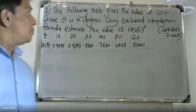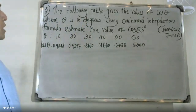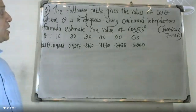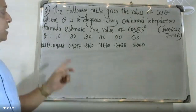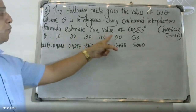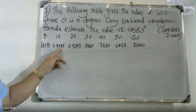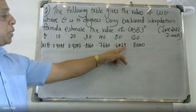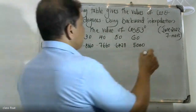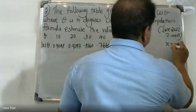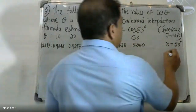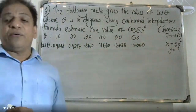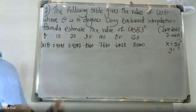Good morning students. The following table gives the values of cos(θ) where θ is in degrees. Using the backward interpolation formula, estimate the value of cos(53°). The needed values are θ = 10, 20, 30, 40, 50, 60 degrees, and the corresponding cos(θ) values are 0.9848, 0.9397, 0.8660, 0.7660, 0.6428, and 0.5. We need to find the value of cos(53°).